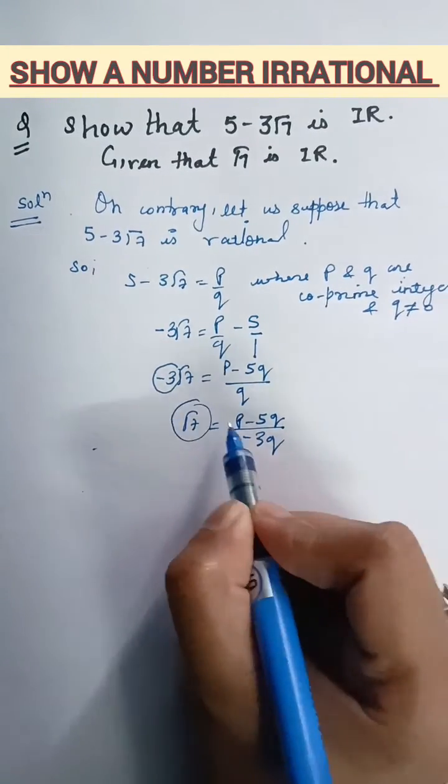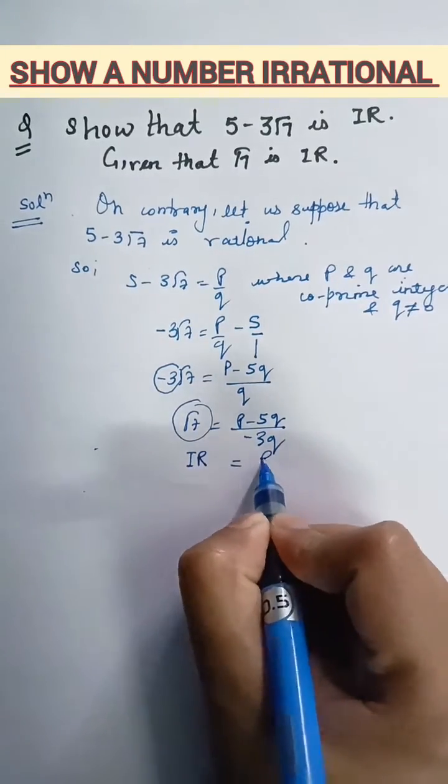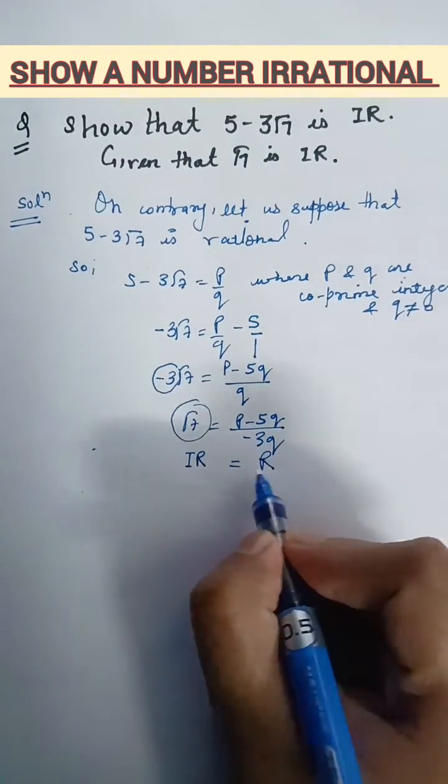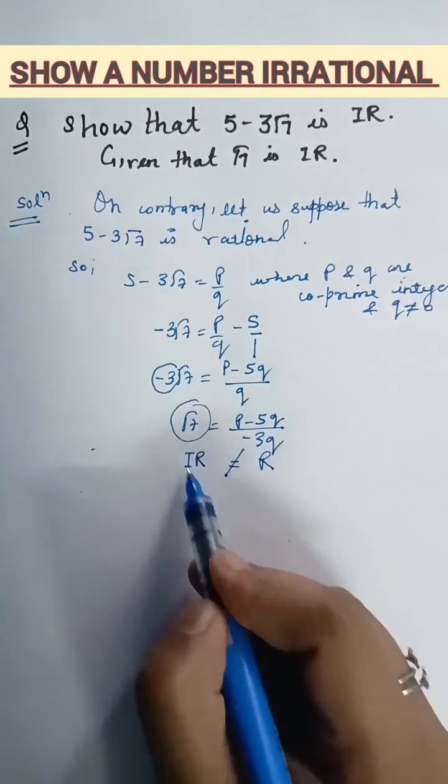So, this way, we are getting an irrational number equal to rational number. This implies irrational number equal rational number. Is it possible that an irrational number can be equal to rational number? No. So, this means that our assumption was wrong. That's why our result is wrong.